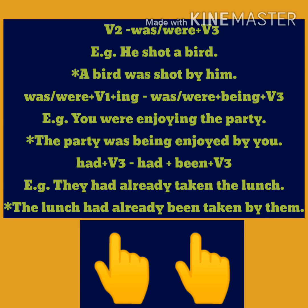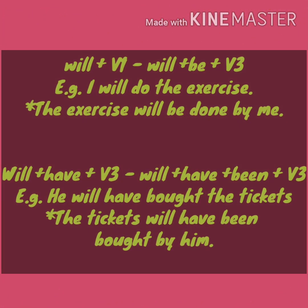In this way we change active into passive voice. Simple future tense — will + V1 — changes into will + be + V3. For example, 'I will do the exercise.' Passive: 'The exercise will be done by me.' Future perfect tense — will + have + V3 — changes into will + have + been + V3. For example, 'He will have bought the tickets.' Passive: 'The tickets will have been bought by him.'